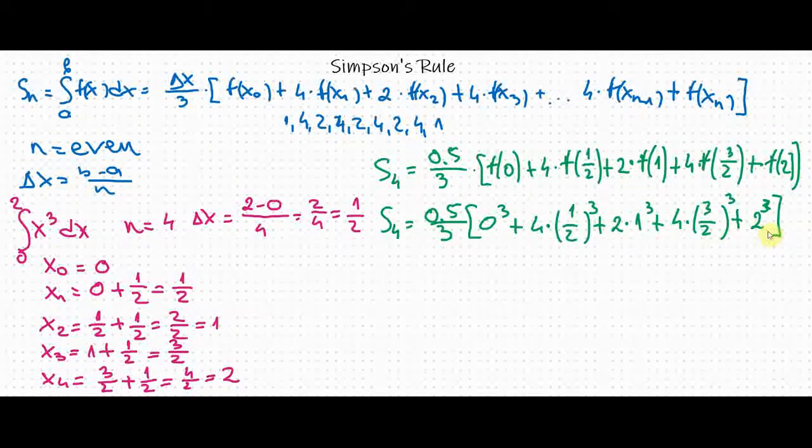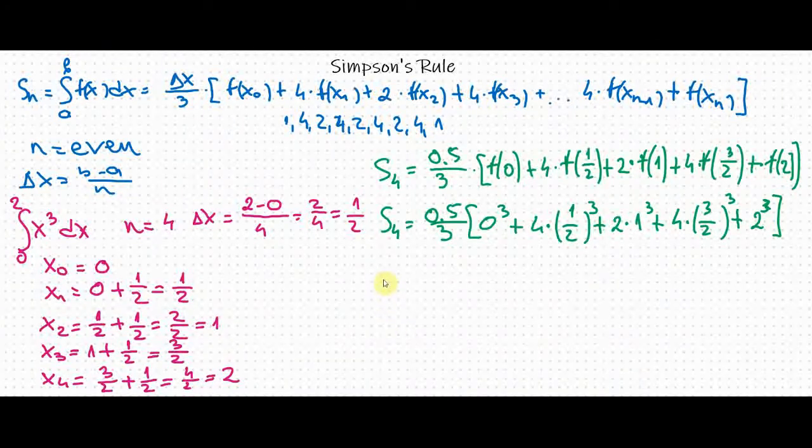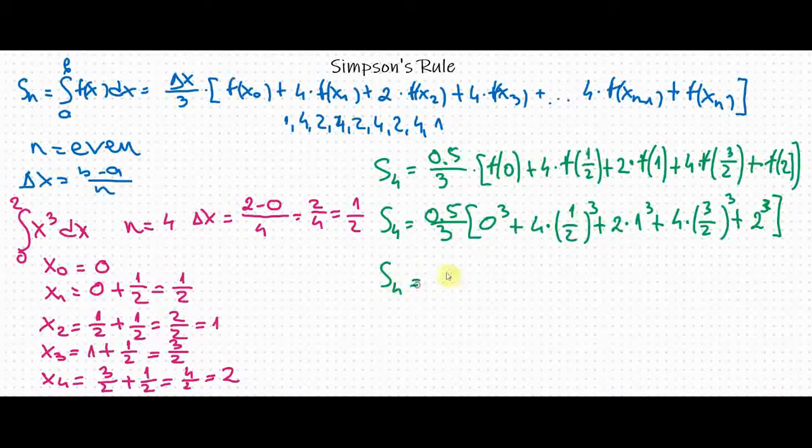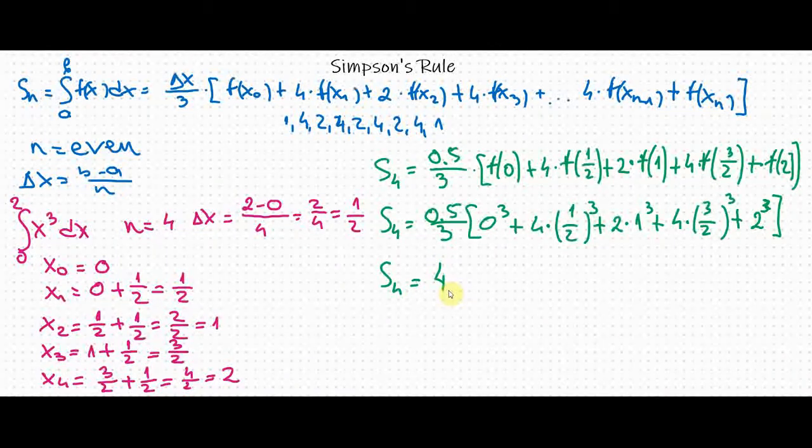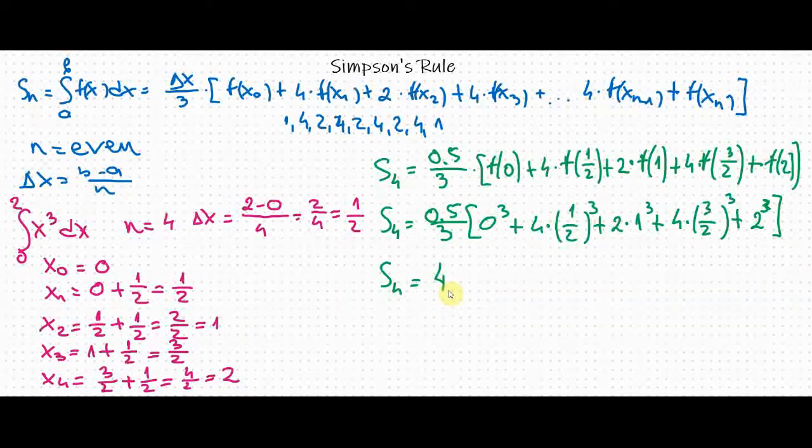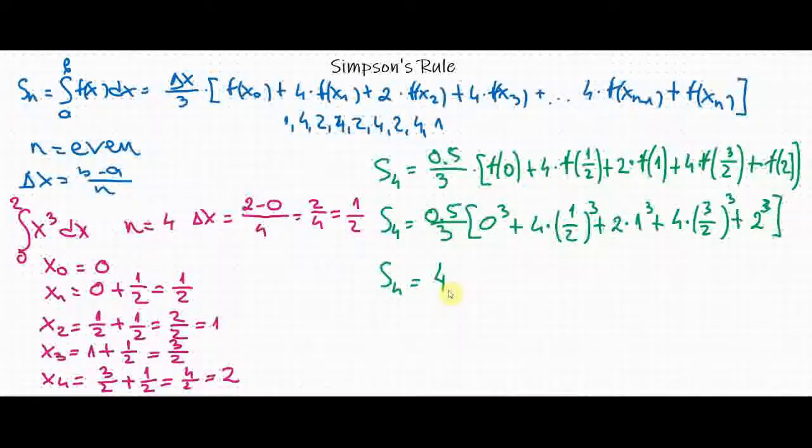If we calculate this we will get an approximation of 4. That is the approximate area under a curve and that is how we do Simpson's rule. Thanks for watching.